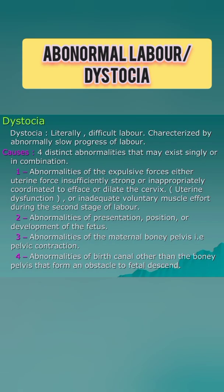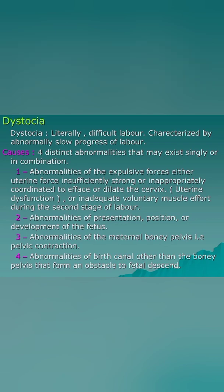Abnormal labor is also known as dystocia. Any deviation from the definition of normal labor is called abnormal labor. Labor in case of a presentation other than vertex, or having some complication even with vertex presentation, will adversely affect maternal as well as fetal prognosis, and is an example of abnormal labor.